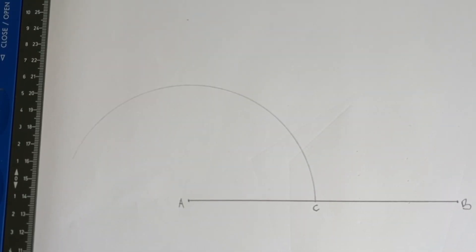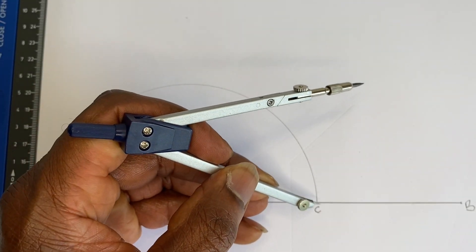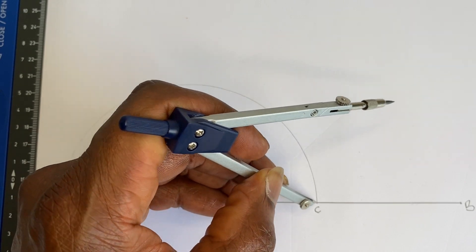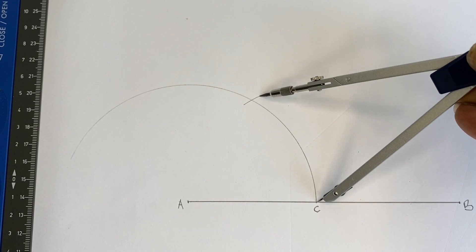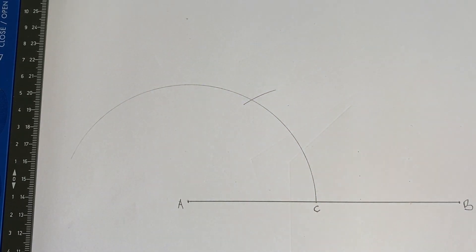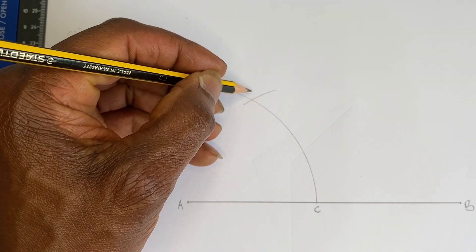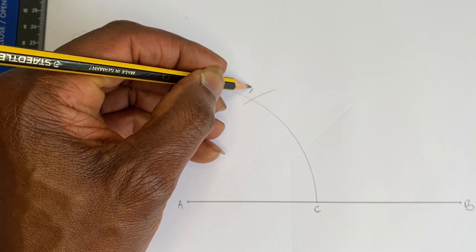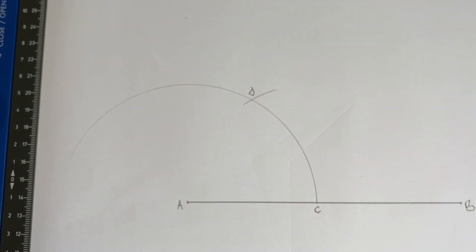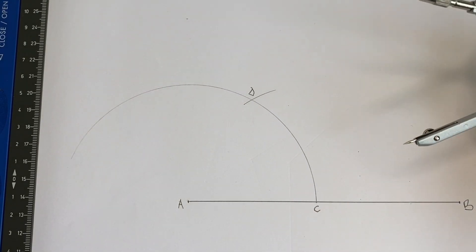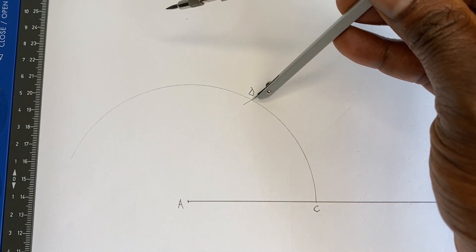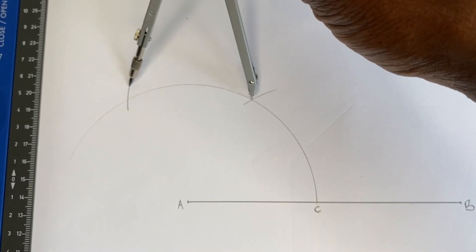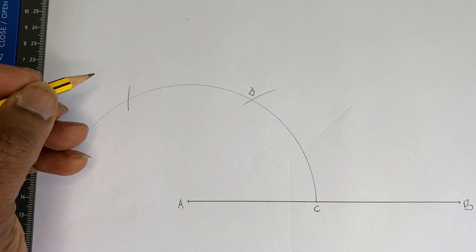Then with the same radius at point C, you draw an arc. You draw an arc and you have this point to be point D. Then at point D with the same radius, you draw another arc to get point E.